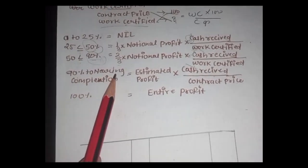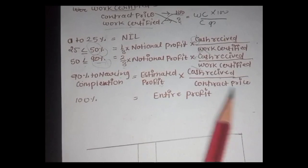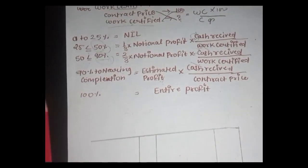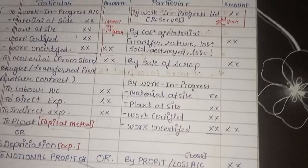90% or near to completion: estimated profit, estimated cash received upon contract price. 100%, 100%. Like, share, and subscribe for the next video.